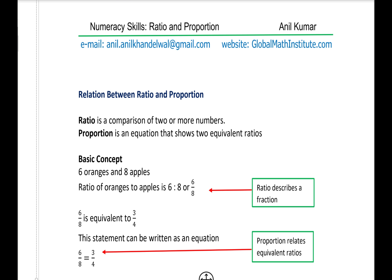The relation between ratio and proportion: it is important to note that ratio is a comparison of two or more numbers, and proportion is an equation that shows two equivalent ratios. For example, if we have six oranges and eight apples, the ratio of oranges to apples is 6 to 8, or as a fraction, 6 over 8. Six over 8 is equivalent to 3 over 4, and when written as an equation — 6/8 = 3/4 — it becomes a proportion.